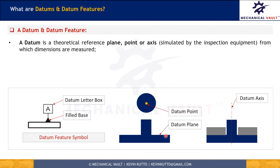A planar surface helps us to get a planar datum, whereas a planar feature of size — like the width of a block or the width of a slot — helps us to get a datum center plane. Because these two faces are parallel, we can get a datum center plane from that width. A diametrical feature of size helps us to get a datum axis, whereas a spherical feature of size helps us to get a datum point.